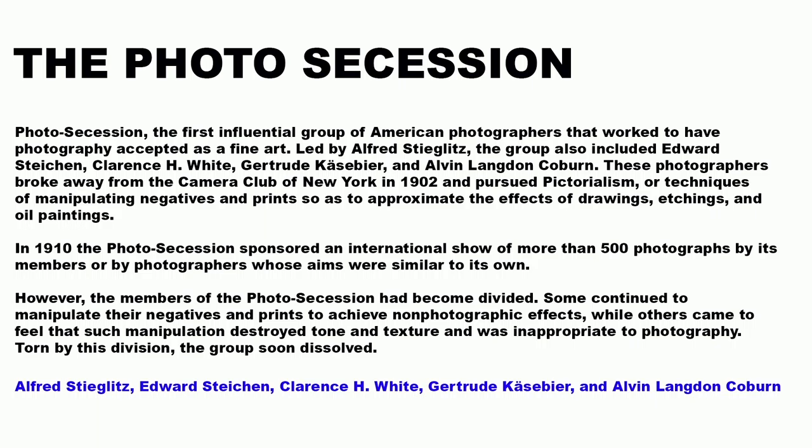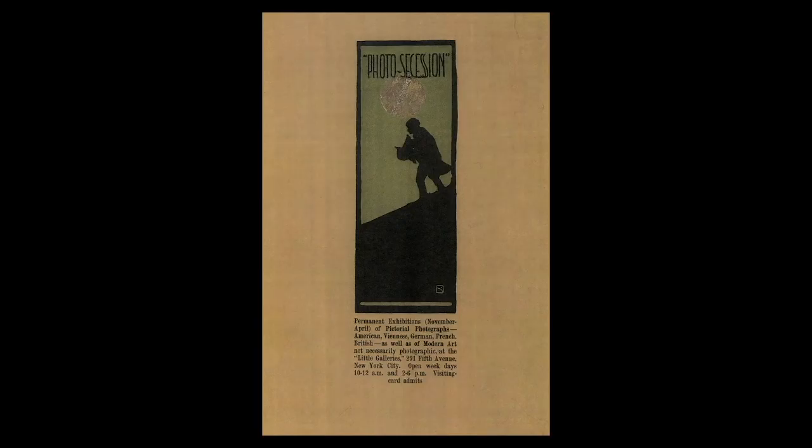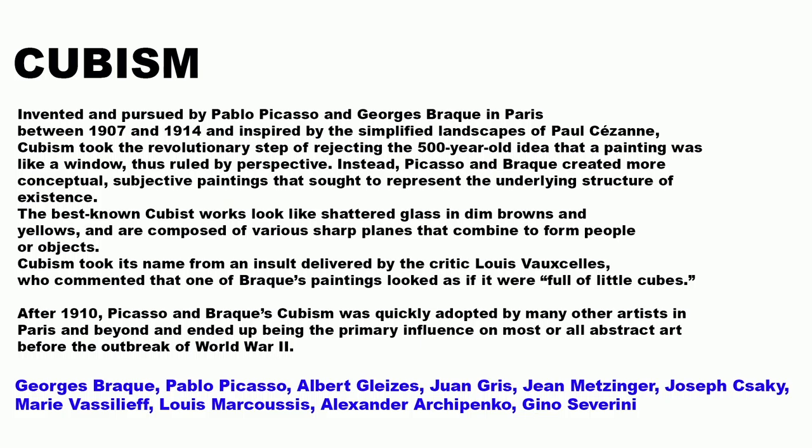The Photo Secession was the first influential group of American photographers that worked to have photography accepted as a fine art. Led by Alfred Stieglitz, the group also included Edward Steichen, Clarence H. White, Gertrude Käsebier, and Alvin Langdon Coburn. They broke away from the Camera Club of New York in 1902 and pursued pictorialism — techniques of manipulating negatives and prints to approximate the effects of drawings, etchings, and oil paintings. In 1910, the Photo Secession sponsored an international show of over 500 photographs. However, the members became divided over manipulation techniques, and the group soon dissolved.